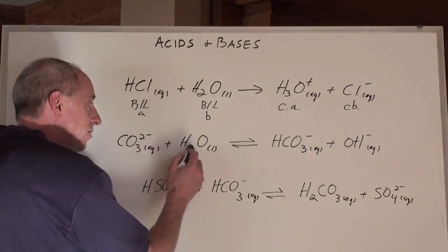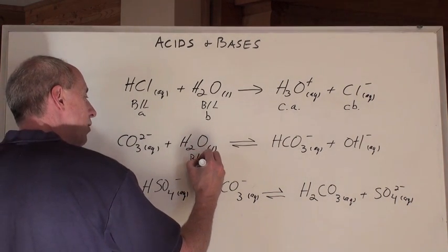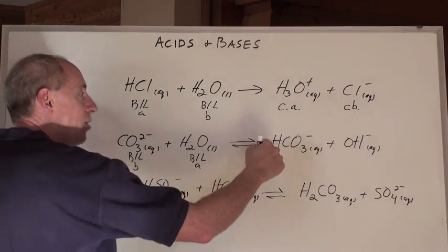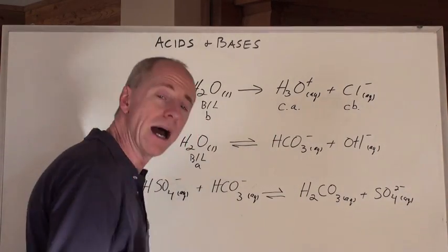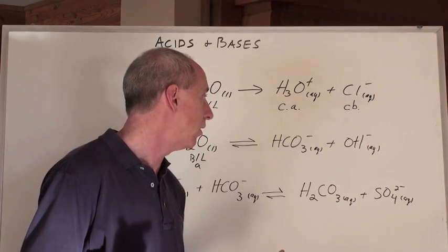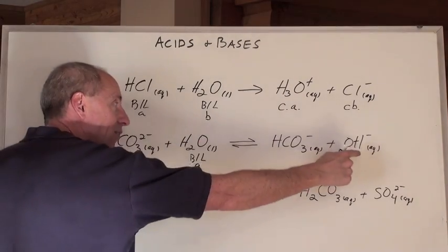Carbonate actually does this in solution. It takes a proton from water, and so water becomes the Bronsted-Lowry acid to this Bronsted-Lowry base, and then you get bicarbonate ion form. Bi- in chemistry means hydrogen, bicarbonate or hydrogen carbonate ion, and hydroxide is left over when H2O loses an H-positive, you get OH-negative.